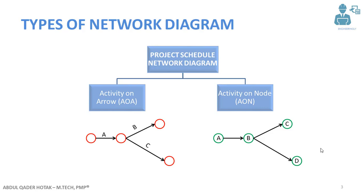The first way is activity on arrow, or AOA, and the second one is activity on node, or AON. In activity on arrow, which is not used so much these days, the activities are written down on the arrows and the length of the arrow shows the duration of each activity. The circles here are called the nodes — this is where an activity starts and this is where an activity ends.